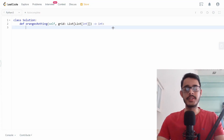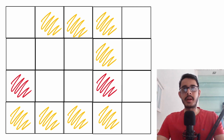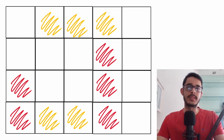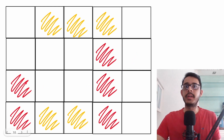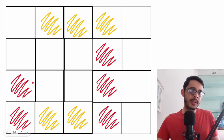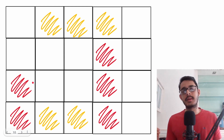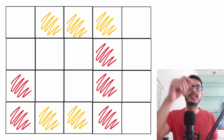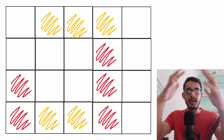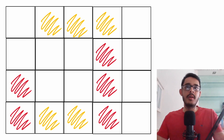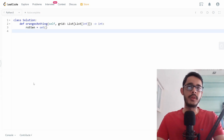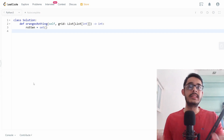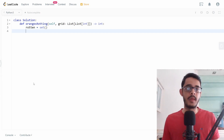Let's start coding. The objective is to track all rotten oranges at any point in time. From the initial state, we explore in all four directions. In subsequent iterations, we don't re-process already-rotten oranges — only the ones on the circumference of the exploration circle matter, as they are what expands the boundary further. We'll create a set to track those boundary rotten oranges.